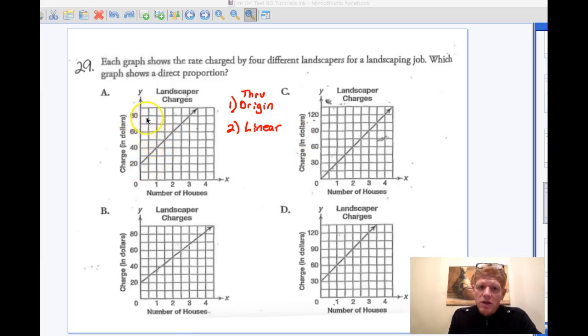Letter A does not pass through the origin, so we know that's not it. Letter B does not pass through the origin, we know that's not it. Letter C does pass through the origin and it is a straight line, so that's probably going to be my answer. Letter D does not pass through the origin, that's not it. So letter C is our answer.